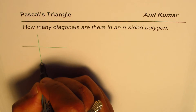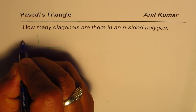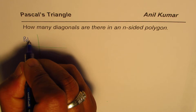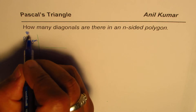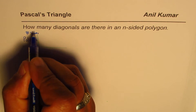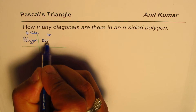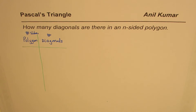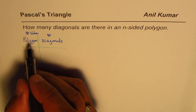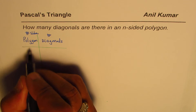We'll take up different polygons beginning with a quadrilateral. We'll make a table with two columns: number of sides for the polygons, and number of diagonals. Let's start with the four-sided polygon, which is a quadrilateral.